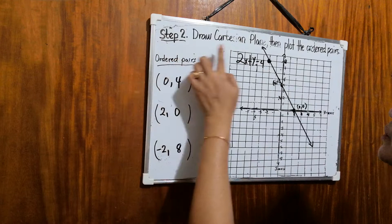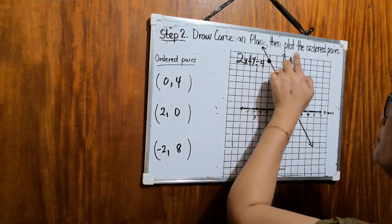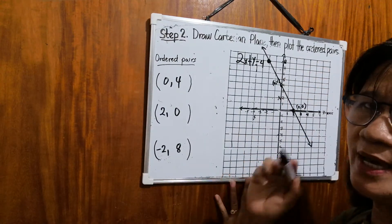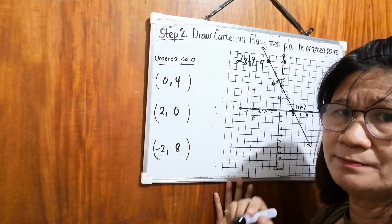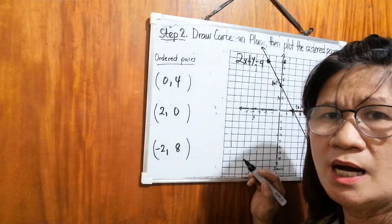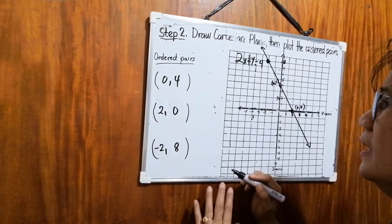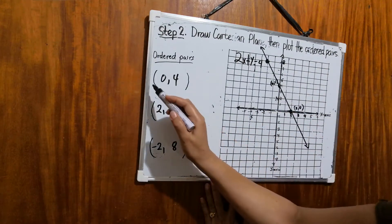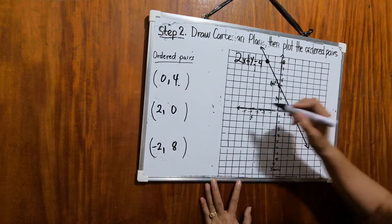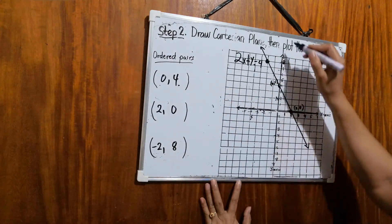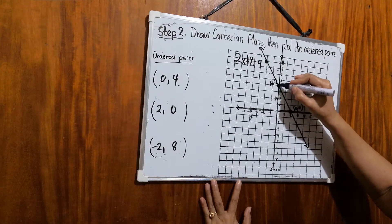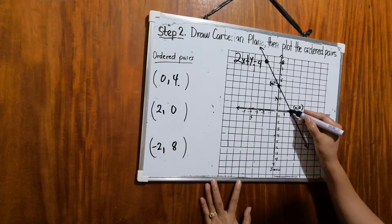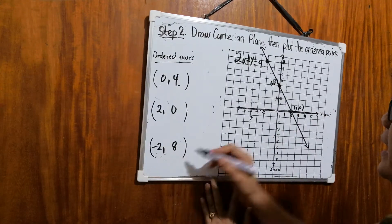In step 2, you need to draw a Cartesian plane and then plot the ordered pairs. So this is our Cartesian plane. I will advise you to use your graphing paper in order for you to maintain the distances. This is our y-axis, x-axis. Now, let's plot the first ordered pair. We have 0, 4. It should be in our y-axis. Then 2, 0 is here. Then negative 2, 8 is here.